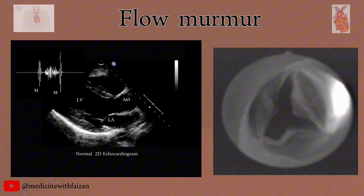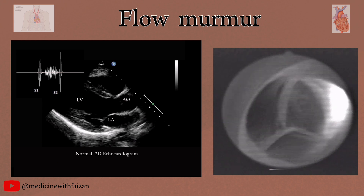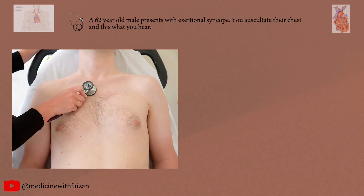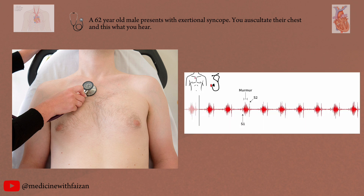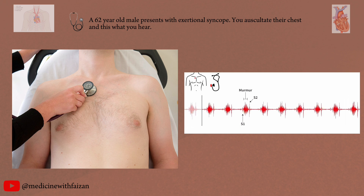The presence of a diminished or absent S2 should raise concern for a pathologic murmur. A 62-year-old male patient presents with exertional syncope. You auscultate their chest and this is what you hear. This is an ejection systolic murmur most likely due to aortic stenosis. Other physical findings and ultimately echocardiography will confirm it.